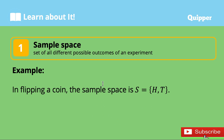Let's learn first what is sample space. Sample space is a set of all different possible outcomes or results of an experiment. For example, in flipping a coin, the sample space is equal to head and tail. This head and tail, or HT, is the sample space — the possible outcomes or results when you flip a coin.